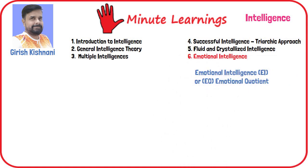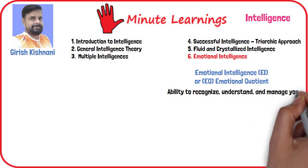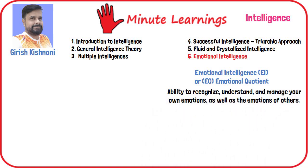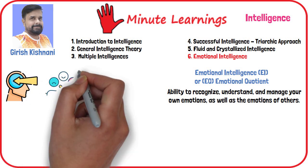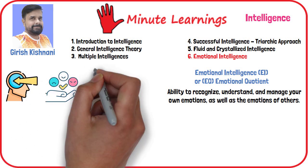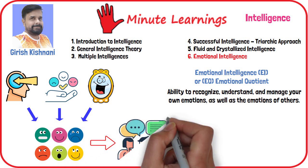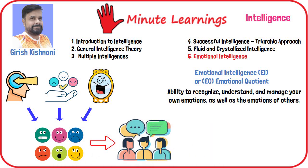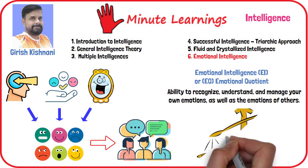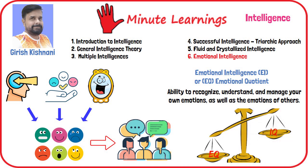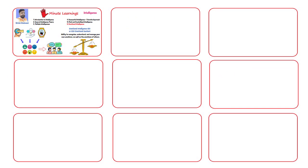Emotional Intelligence, EI or EQ, for emotional quotient, is the ability to recognize, understand, and manage your own emotions, as well as the emotions of others. This involves perceiving, interpreting, and responding to emotions in ways that facilitate effective and constructive communication and relationships. Many experts believe that Emotional Intelligence is crucial for success in life, sometimes even more so than IQ.